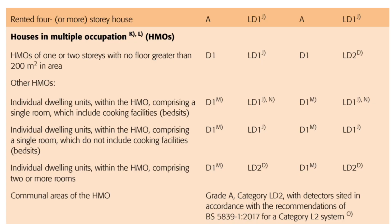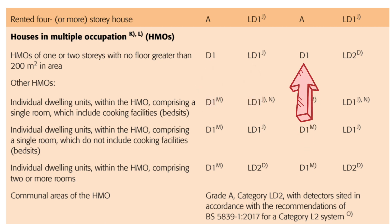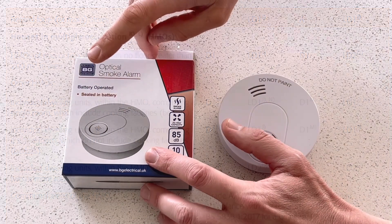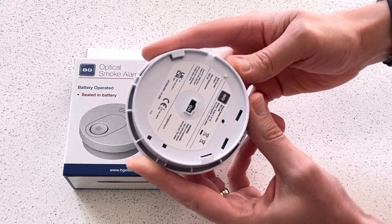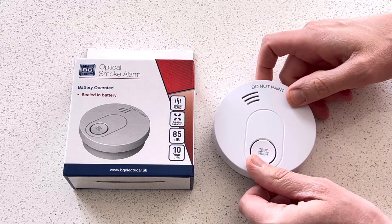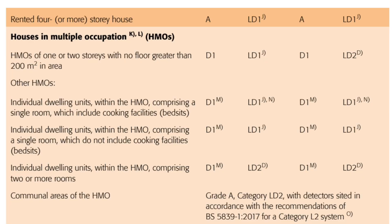There's another interesting point in connection with houses in multiple occupancy, or HMOs. For smaller HMOs of one or two storeys with no floor greater than 200 square metres in area, new premises should have a Grade D1, Category LD1 system installed, and for existing premises it's D1 with an LD2 category. That's logical — you'd want to keep your system tamper-proof, and there's an increased level of protection for people who may not take as much care of their living space as they would if they owned it. Other types of HMO have Grade D1 systems with mainly LD1 categories, unless the individual dwelling units have more than one room, in which case it becomes LD2.